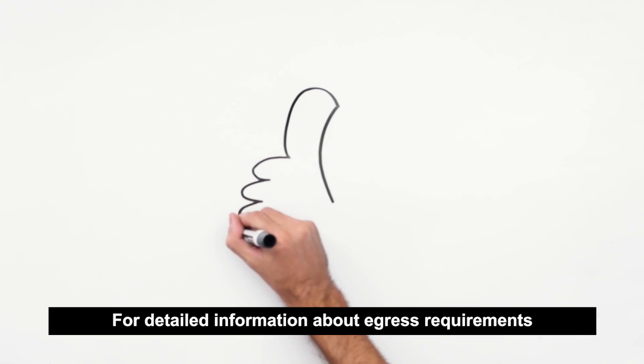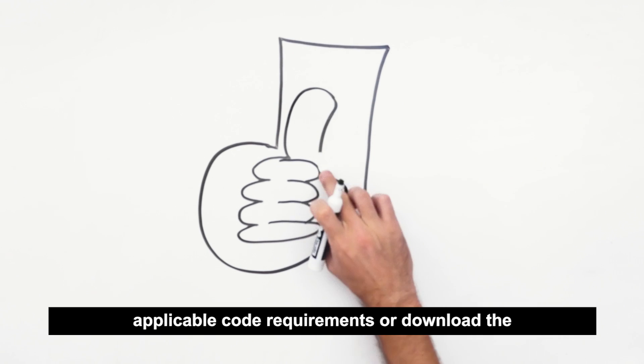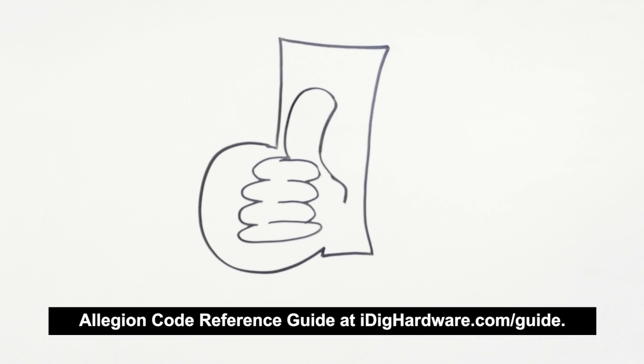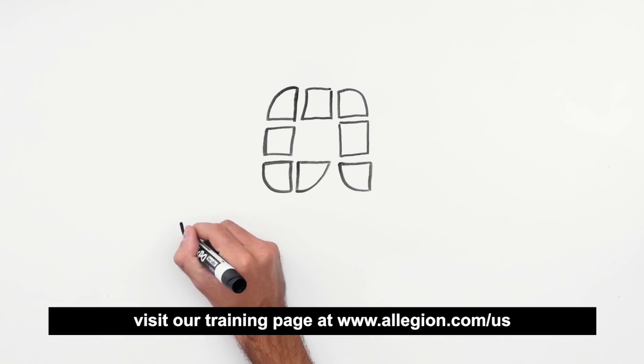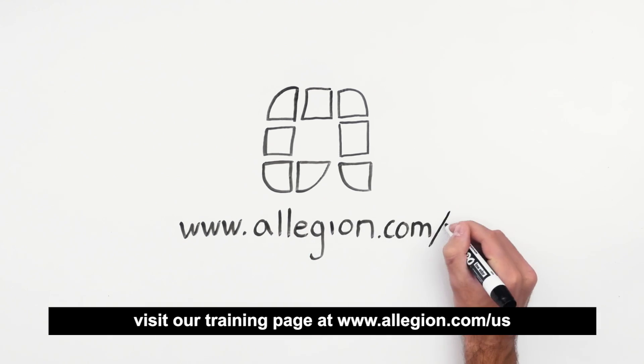For detailed information about egress requirements for door openings, refer to the applicable code requirements or download the Allegiant Code Reference Guide at iDigHardware.com/guide. To watch more videos, visit our training page at www.allegion.com/us.